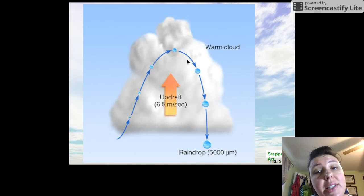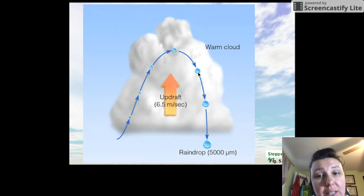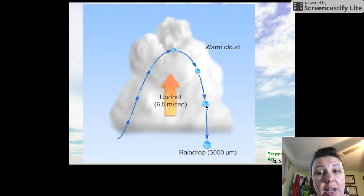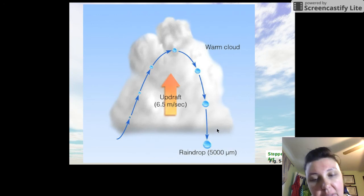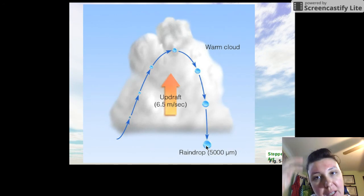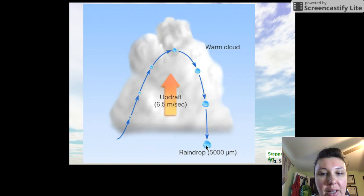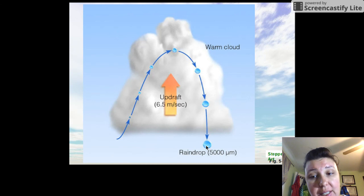As it's pulled down through the cloud, it's still coalescing and colliding — gaining size continuously until it exits the cloud at its maximum mass. From there, gravity pulls it the rest of the way to Earth without any further gain in mass or size.